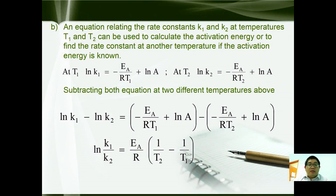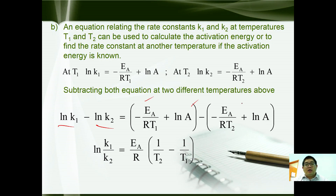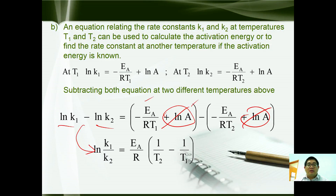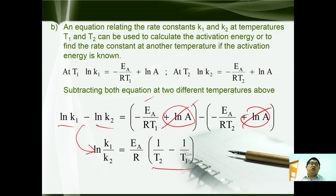Other than using a graph, we can also use a calculation method to determine activation energy. If given two different rate constants at two different temperatures, rearranging the Arrhenius equation gives: ln(k₁/k₂) = (−Ea/R)(1/T₁ − 1/T₂), or equivalently: ln(k₁/k₂) = (Ea/R)(1/T₂ − 1/T₁). This equation can be used to calculate activation energy quantitatively without plotting a graph.